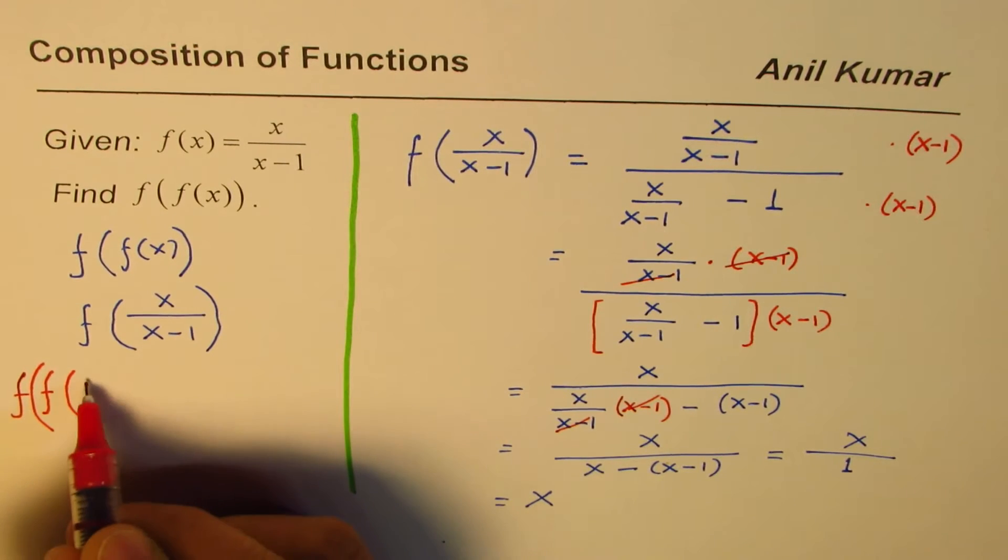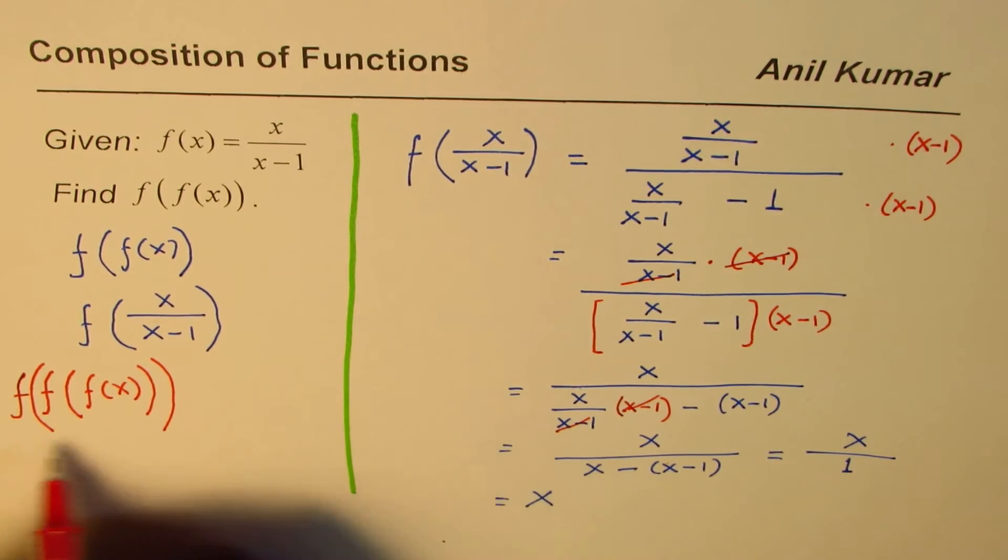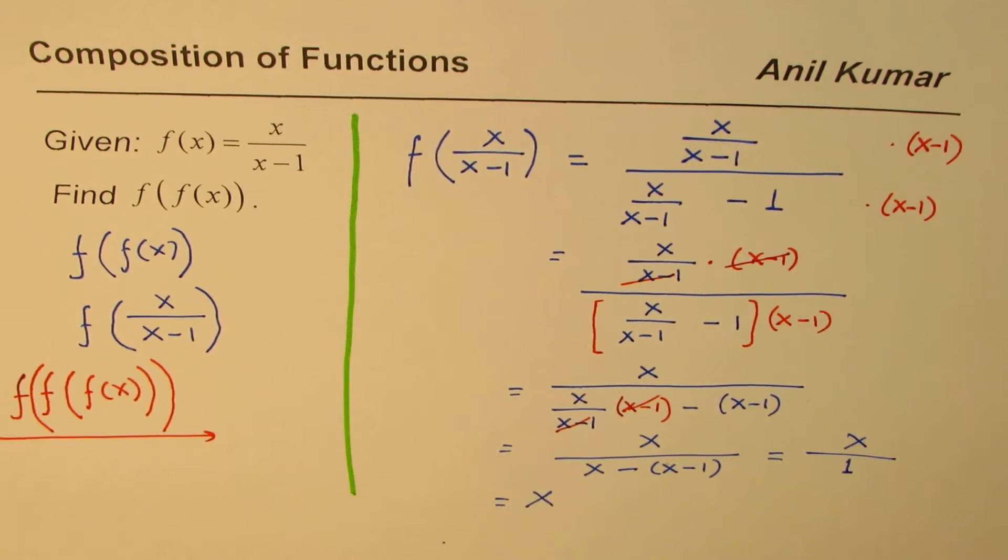That is to say, we have done f of f of x. So what we'll do is another layer of x. As a practice, try to find what this is. So that means, first you can do inside, you'll get this, and then again the same thing.